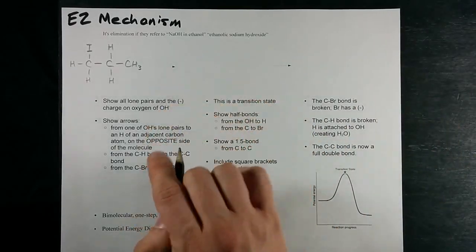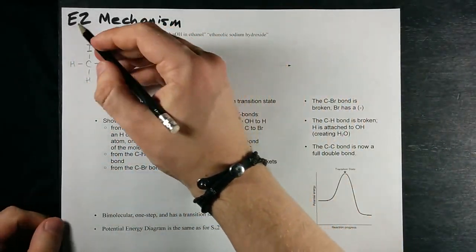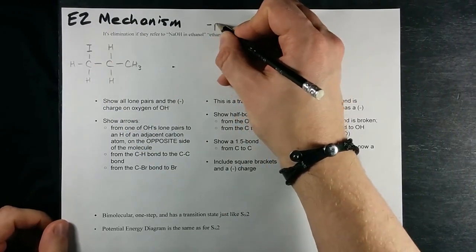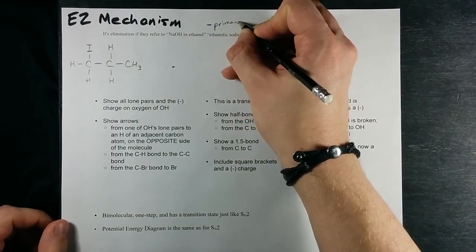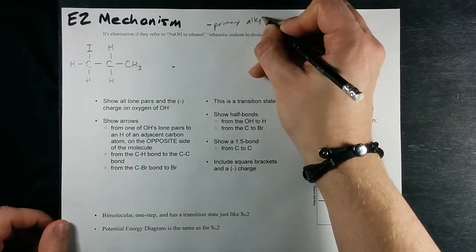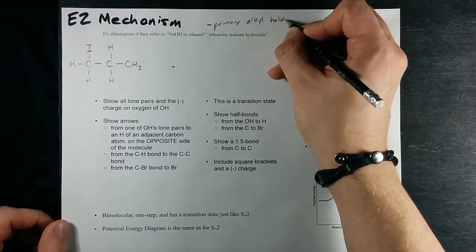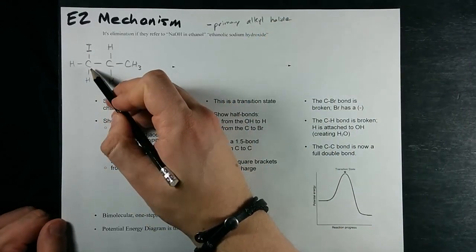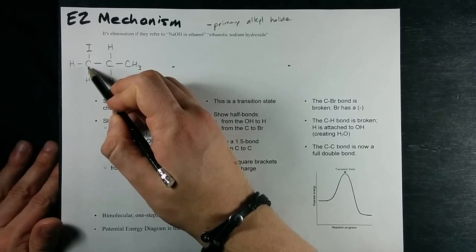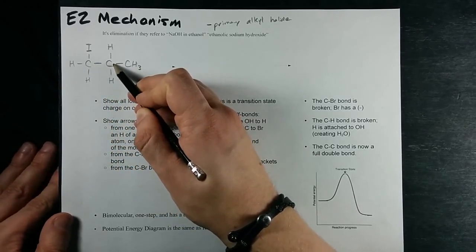E2 reaction mechanism. E2 reaction mechanisms are very popular for primary alkyl halides. That is to say that the carbon that has the halide or leaving group on it is only attached to one other carbon.